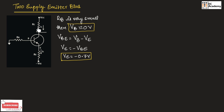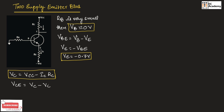From the circuit, we can write Vc is equal to Vcc minus Ic·Rc. If we substitute the value of Vc, we can write Vce is equal to Vcc minus Ic·Rc minus Ve. Since Ve is minus Vbe, we can write Vce is equal to Vcc minus Ic·Rc plus Vbe.